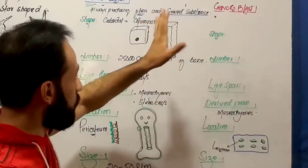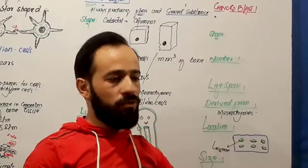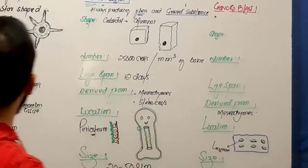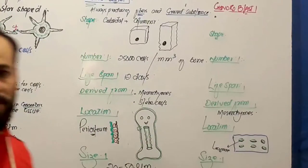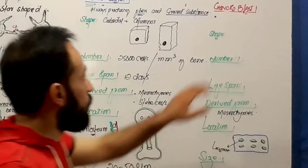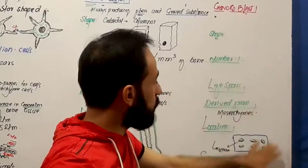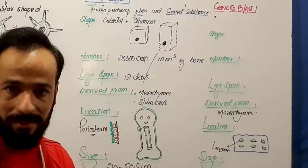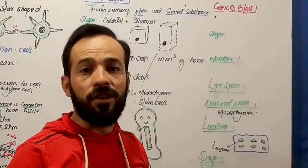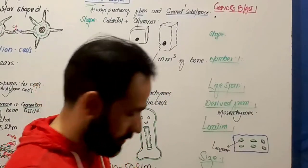Blasts are those cells which are always producing the ground substance and fibers of the tissue, but cytes are those cells which have lost the capability of producing the fibers and the ground substance of the tissue. The previous lecture was about the chondrocyte and this is about chondroblast cells. Chondroblasts are the cells which are always producing the fibers and the ground substance of the cartilage.